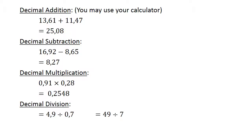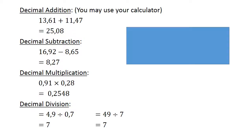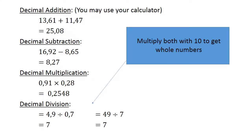Decimal division. Four point nine divided by zero point seven. Multiply both by ten to get whole numbers: forty-nine divided by seven equals seven.